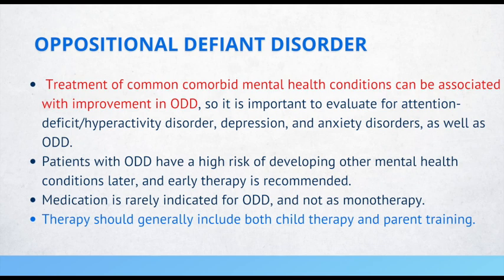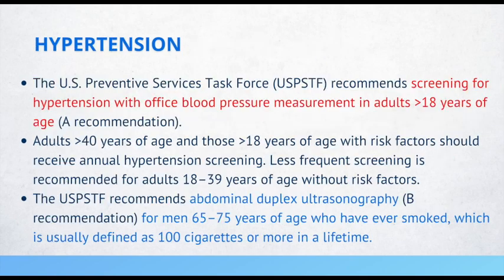Treatment of common comorbid mental health conditions such as ADHD, depression, and anxiety disorders can be associated with improvement in ODD. Patients with ODD have a high risk of developing other mental health conditions later, and early therapy is recommended. Medication is rarely indicated for ODD and not as monotherapy. Therapy should generally include both child therapy and parent training.